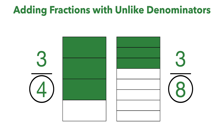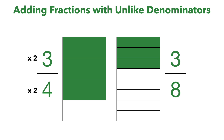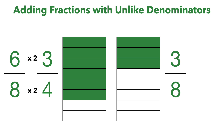Looking at our denominators of 4 and 8, we can get this 4 to an 8 if we just multiply it by 2. So we have to multiply the entire fraction by 2 to do that. So 4 times 2 is 8 and 3 times 2 is 6. That means we've made this fraction into 6 eighths, which is the same fraction — what we've done is split each section into 2 because we multiplied the whole thing by 2. So now in our first section it's split into 2 parts, and then you do that for the rest of the fraction.